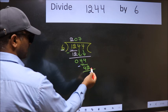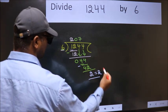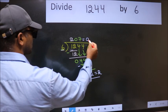No more numbers to bring down. So we stop here. This is our remainder. And this is our quotient.